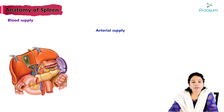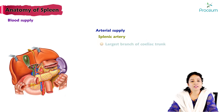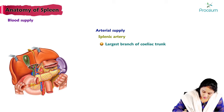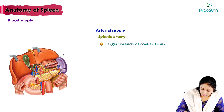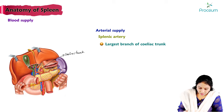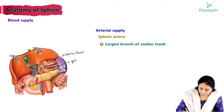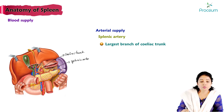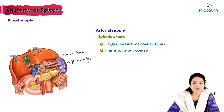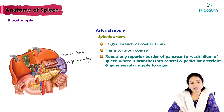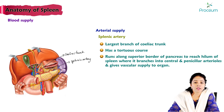Blood supply of the spleen: the main arterial supply is from the splenic artery, the largest branch of the celiac trunk, which arises from the abdominal aorta. The splenic artery has a tortuous course and runs along the superior border of the pancreas to reach the hilum of the spleen, where it branches into central and penicillar arterioles to provide vascular supply.